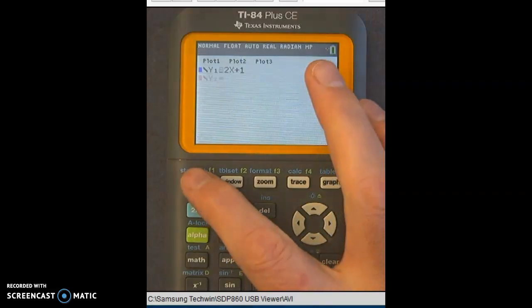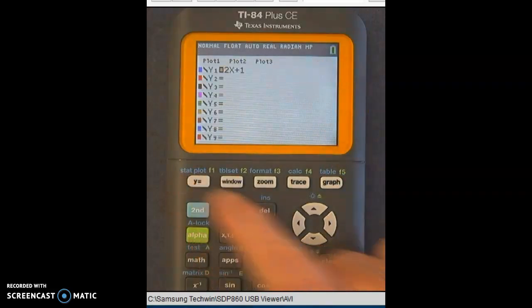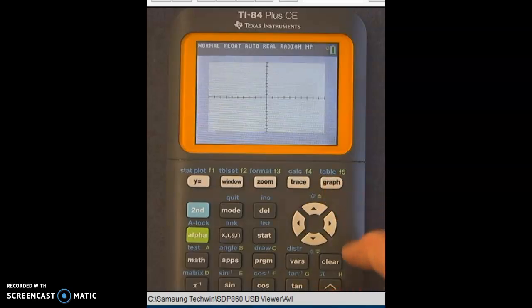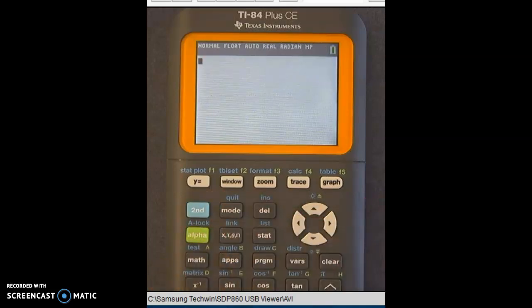To get out of the table, if you want to just put in a new equation, you just click Y equals. If you want to look at the graph, you just hit graph. And if you just want to do some basic math again, you can hit second, quit.